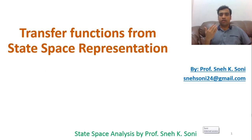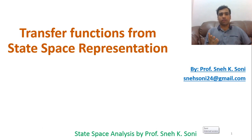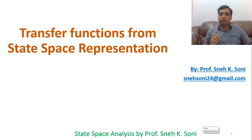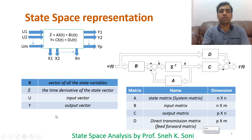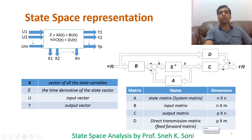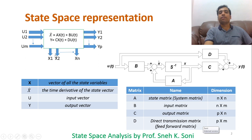Today we are doing the next topic: conversion of state space into transfer function. Before that, I will quickly revise how we use state space analysis. We are already familiar with this block diagram, where we represent the system with the equations x-dot = Ax(t) + Bu(t) and y = Cx(t) + Du(t), where inputs are represented by u, output by y, and state variable by x.